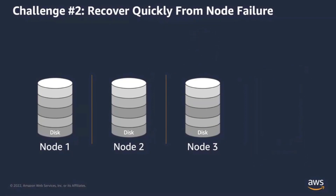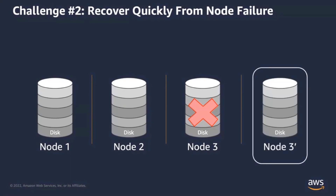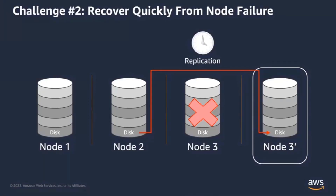The second challenge is recovering quickly from a node failure. In this scenario, node 3 has failed in a three-node deployment. To recover, you need to add a new node, but then you run into the same issues as with adding read capacity — the replacement node needs a copy of that data replicated from one of the existing nodes. This takes time depending on how much data there is, and further reduces the performance of an already impacted database cluster, since resources on another node are needed for data replication.